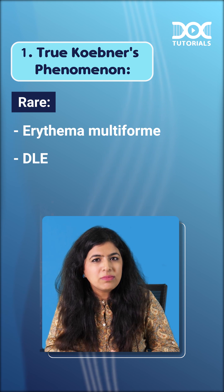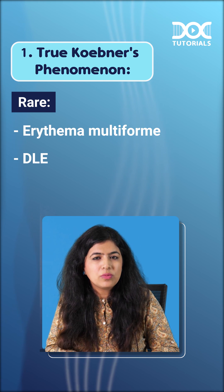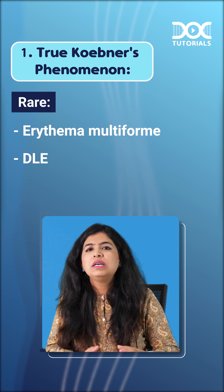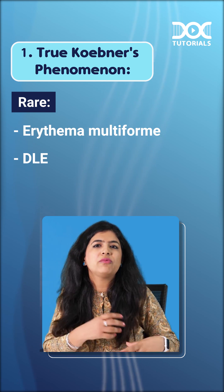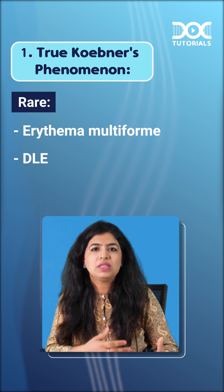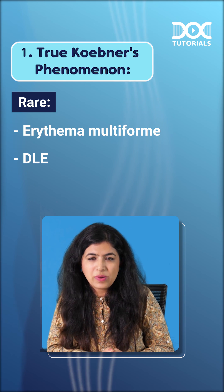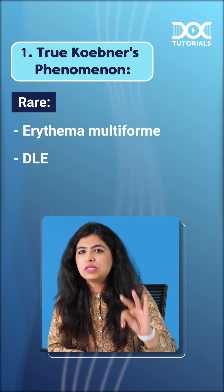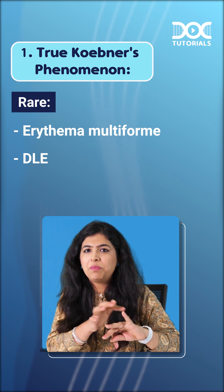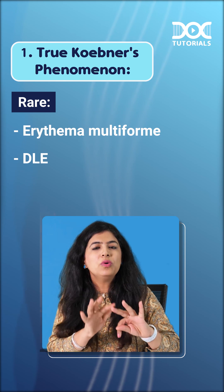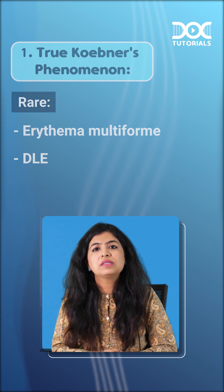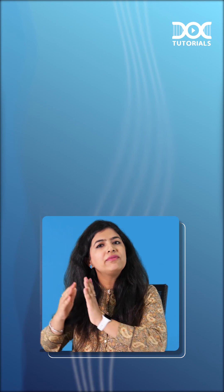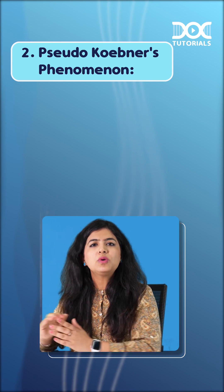Some rarer disorders like erythema multiforme and DLE may also sometimes show the Koebner phenomenon. These are relevant for multiple choice questions where those options may be given. Otherwise, the three important ones — PLV — are what you remember for true Koebner.